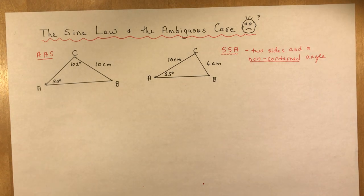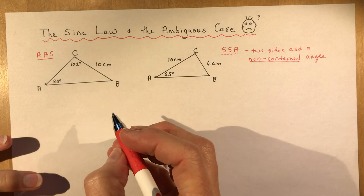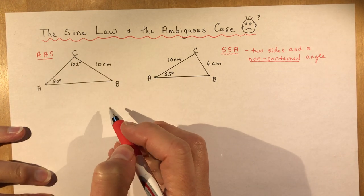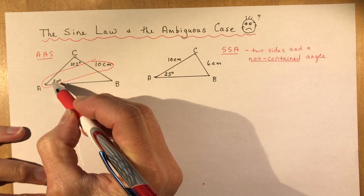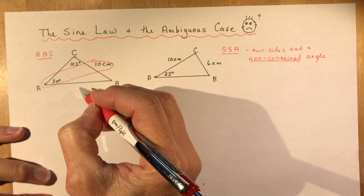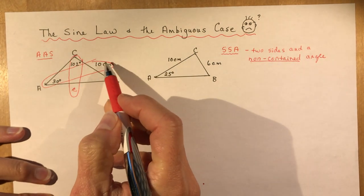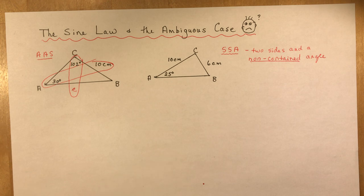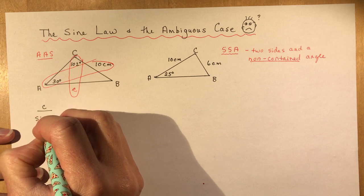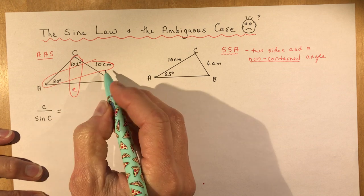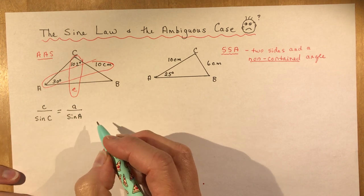Let's start with the sine law from what you did in grade 10. To use the sine law, first of all you don't have a right angle triangle, and you need a pair of sides and angles. From there, if I wanted to find this side length C I could use this X pattern. I always tell my students to look for an X — that sets up your ratios. So this would say that C over the sine of C equals side length A over sine A, and as long as I have three of the four pieces of information I can solve for the fourth.